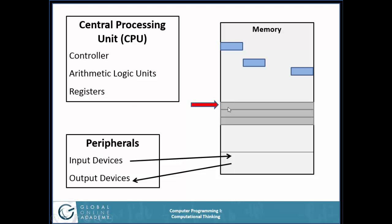Whenever one instruction is done, the central processing unit will advance the program counter to the next location — so instead of pointing right here, it's going to move down to right here.